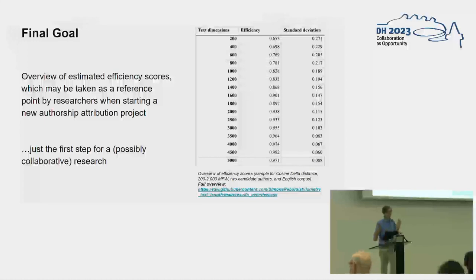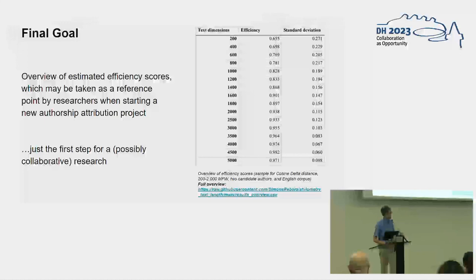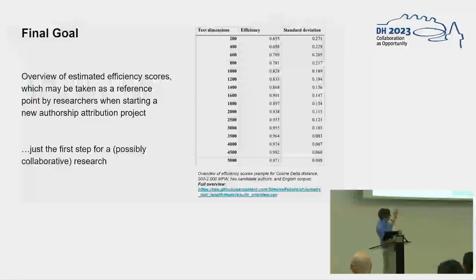This is a preliminary presentation of the results of this research. The final goal is to have an overview of estimated efficiency scores to provide guidelines for people doing authorship attribution research with specific setups — a certain number of candidate authors, a certain text dimension, and so on. You can see here an initial example of what can be produced. This is a first step and I am open to possible collaborations and will continue working on this.